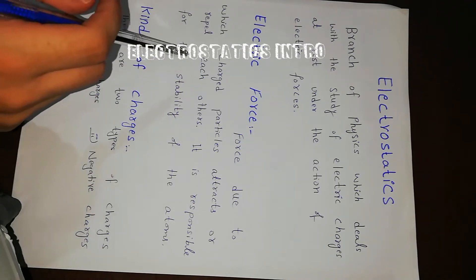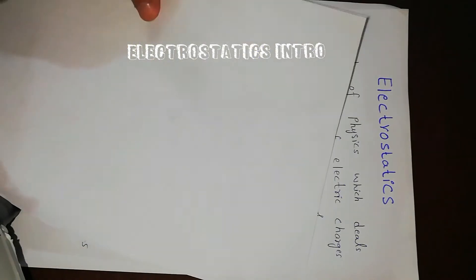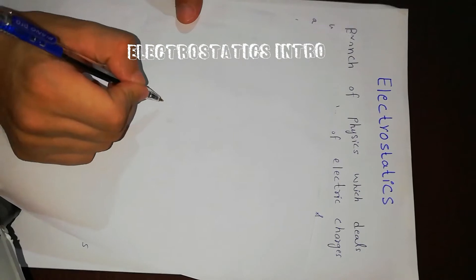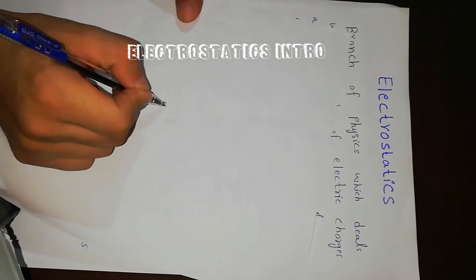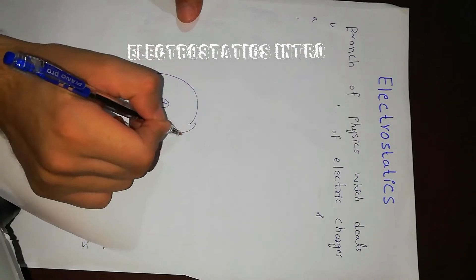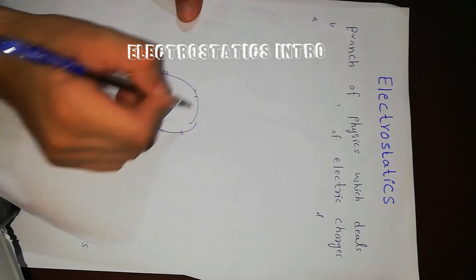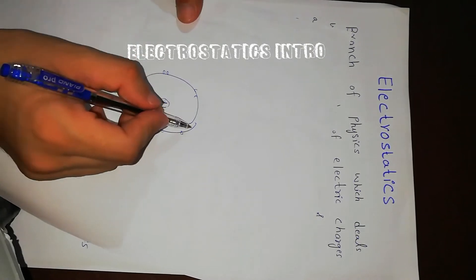For example, let's say we have an atom. Atoms have a nucleus at the center and electrons revolving around it. Here are electrons which are revolving around the nucleus.